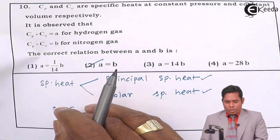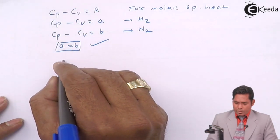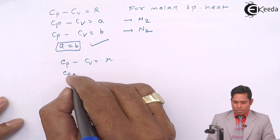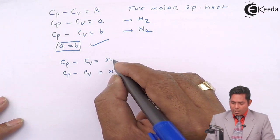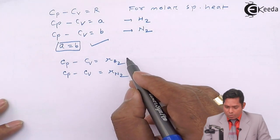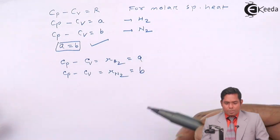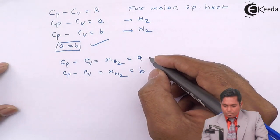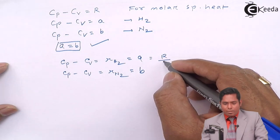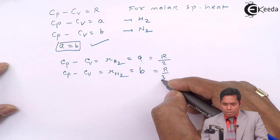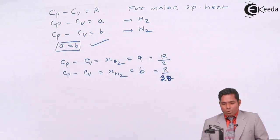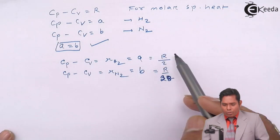But if you see for the principal specific heat, then we know that Cp minus Cv equals to small r. This R is R hydrogen and R nitrogen, this R is different. This is not same for all the gases. So in the given question it is given A and it is given B. If you think these are the principal specific heat in terms of grams, then this will be R divided by the molecular weight in grams. So hydrogen is 2, and here it will be 28 for nitrogen. This is nitrogen, not oxygen. So what we will do now, if Cp minus Cv is equal to R by 2 for hydrogen and this is for nitrogen.